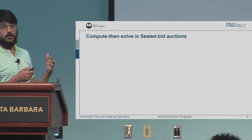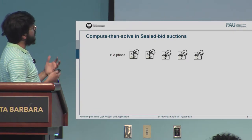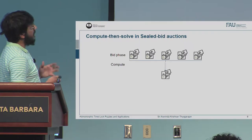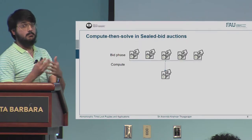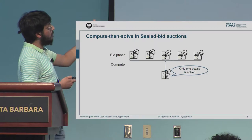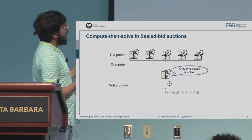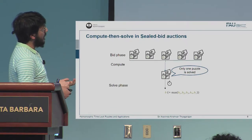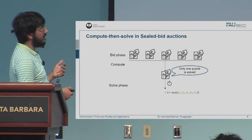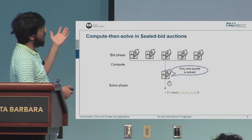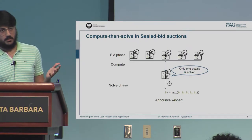Let me show how this would work in the sealed bid auction case. As before, we have the bid phase where bidders embed their bids in puzzles. Then you have a compute phase where you take all these puzzles, compute on top of them, which results in a single puzzle with some bid embedded in it. You try to solve this single puzzle — note that instead of phi puzzles, you just have one puzzle to solve. Eventually, after time T, you obtain the bid B embedded in this final puzzle, which happens to be the maximum of all the bids originally submitted. With this information, you can announce the winner.